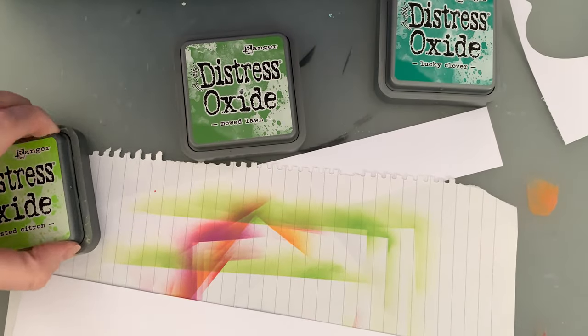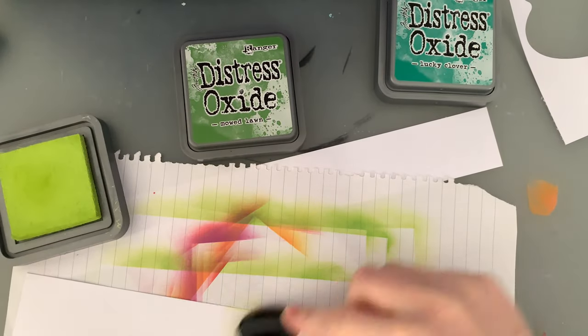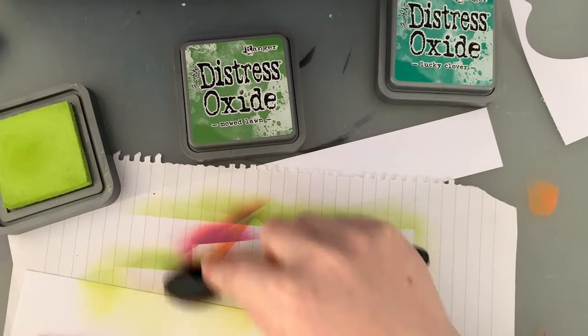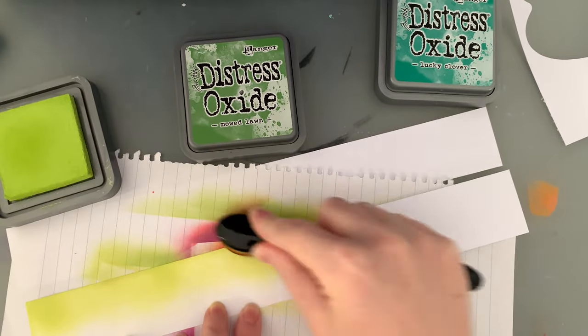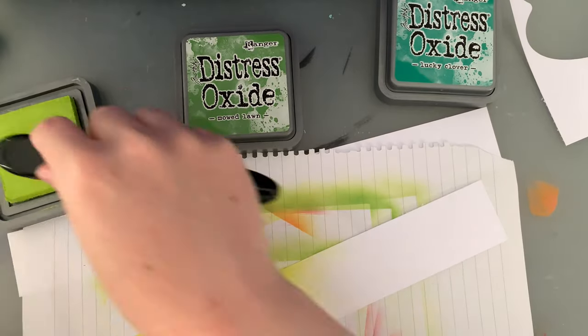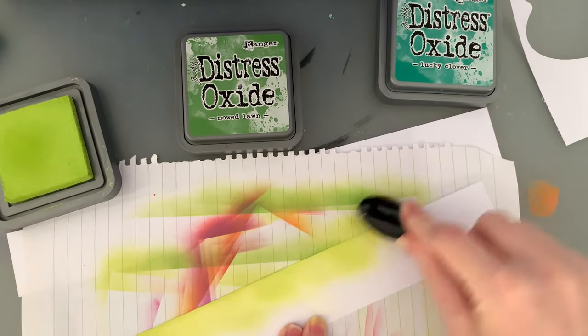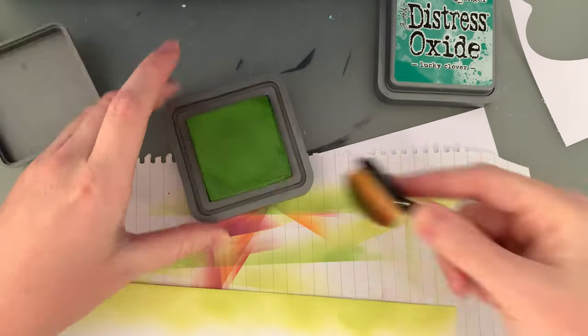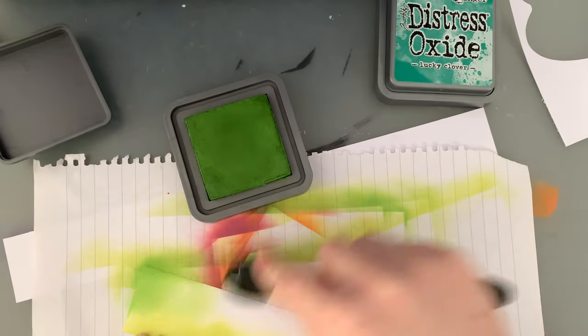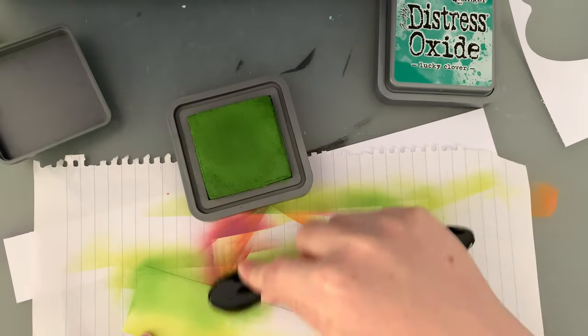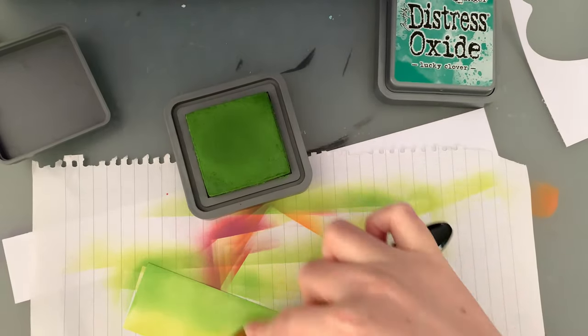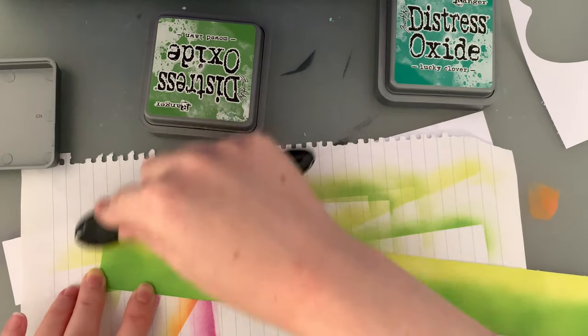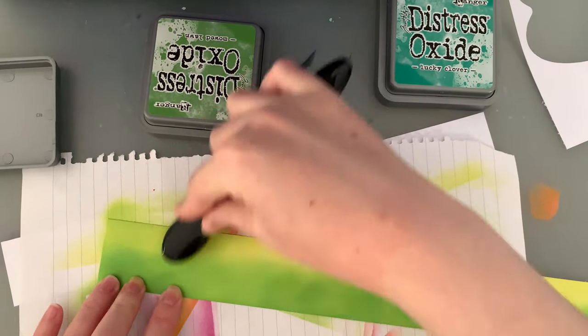So I've got my favorite distress inks for grass - I have Twisted Citron, Mowed Lawn, and Lucky Clover. They're kind of the only greens that I actually own, so I kind of make them work. And even though they're different shades of green, the wonderful thing about these inks is that they all blend so well together. I'm using the Twisted Citron and the Mowed Lawn first, just going back and forth with these making up a nice kind of grassy green.